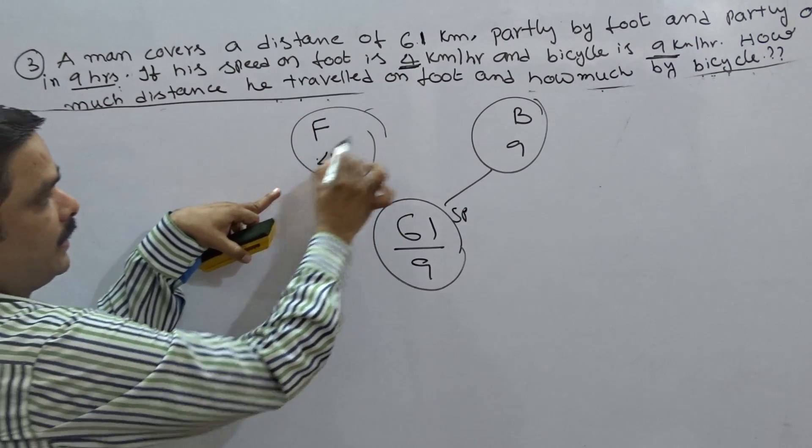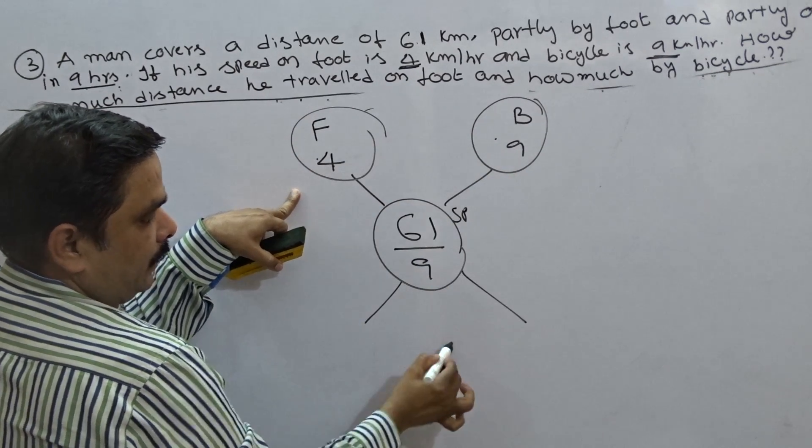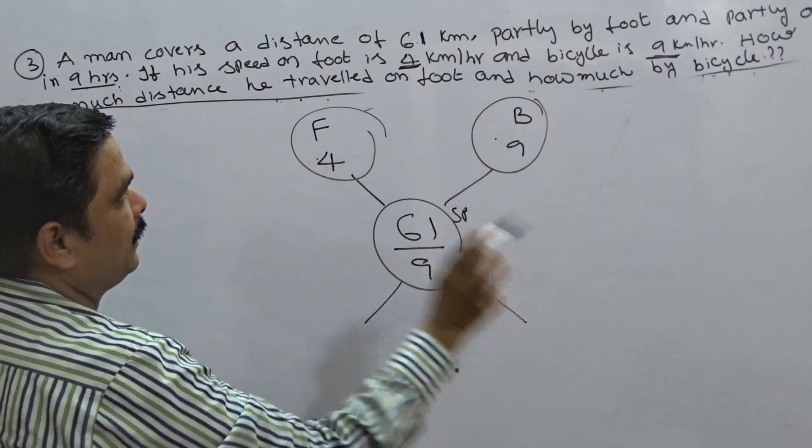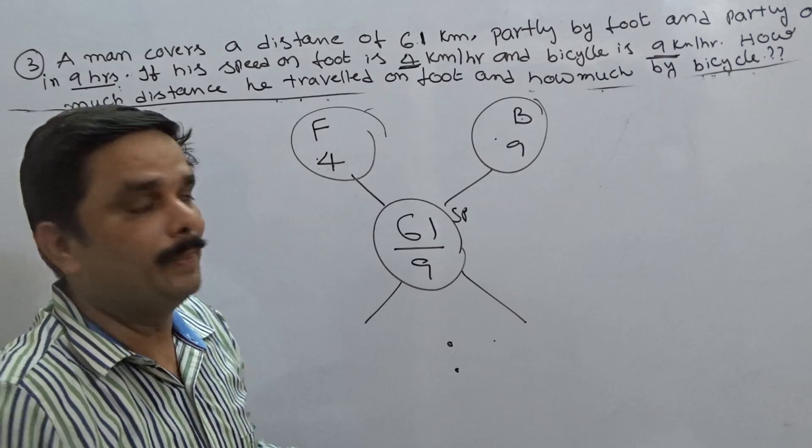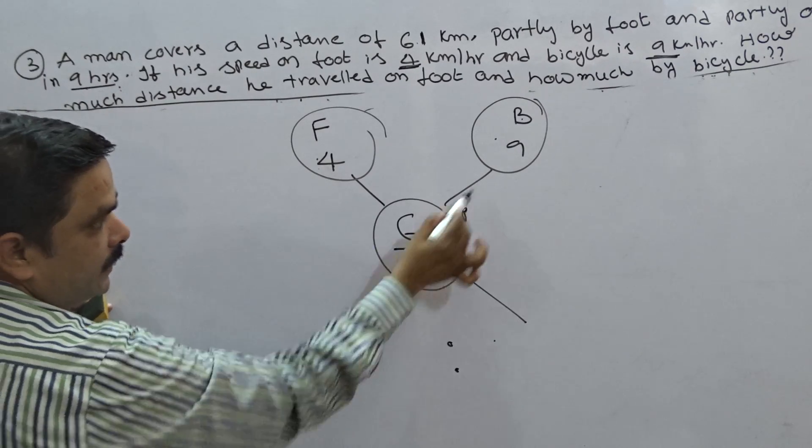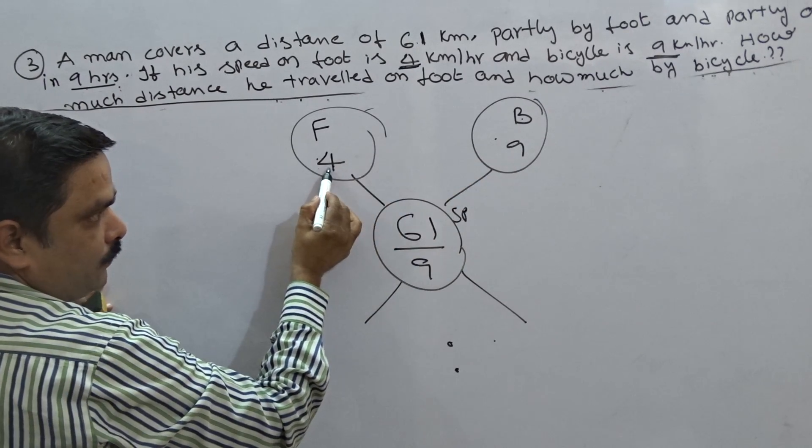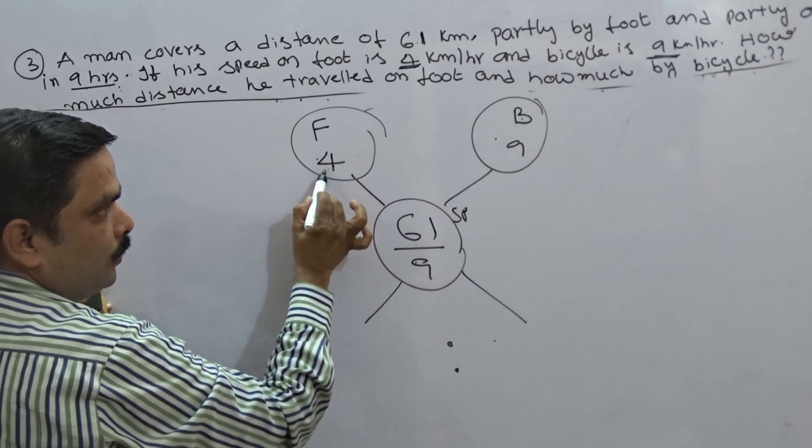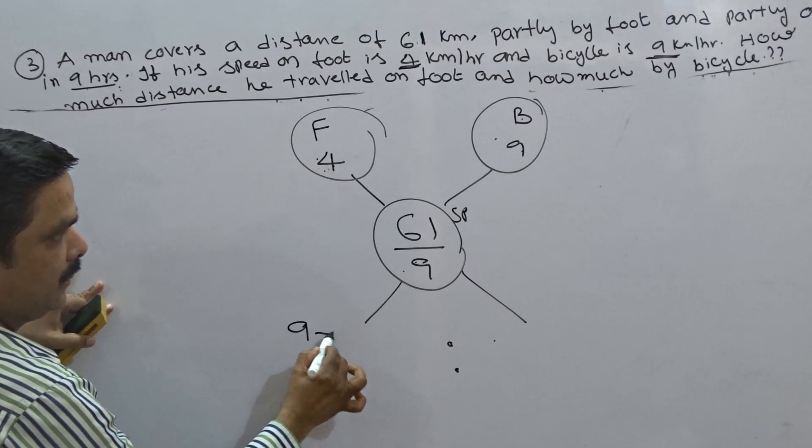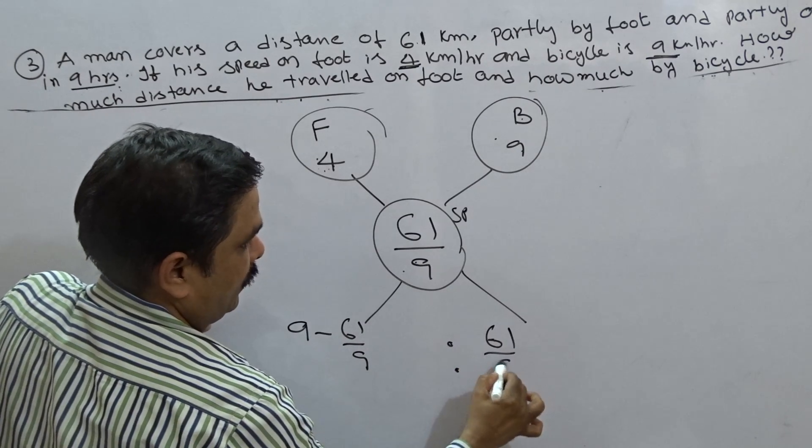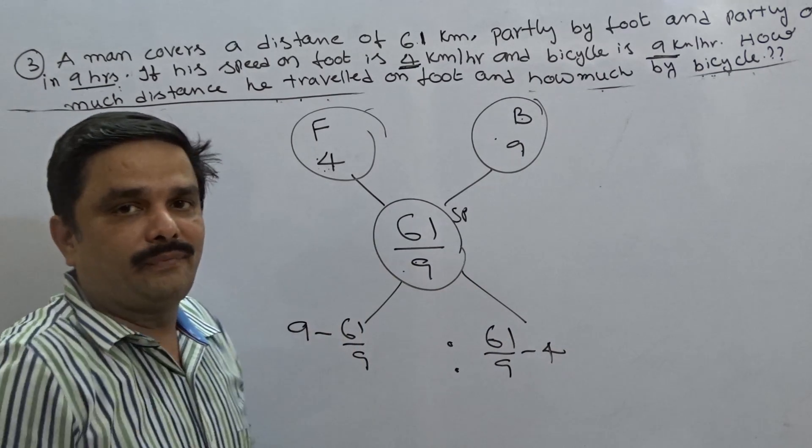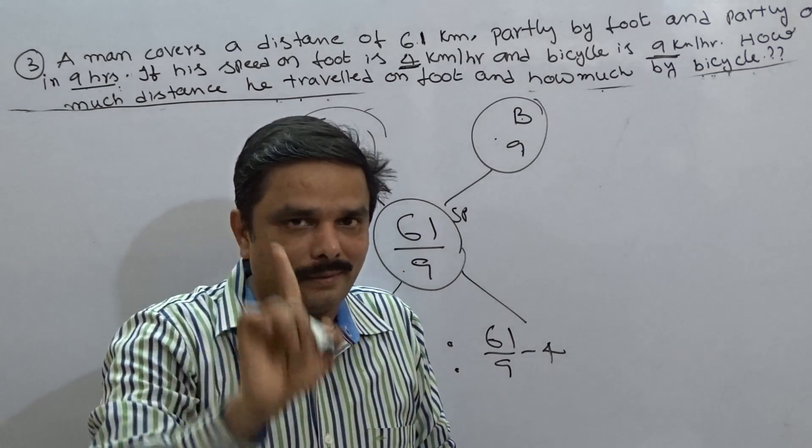Now, since I have started with speed, I should end up in time here. Now, the ratio of time on foot and time on bicycle. The ratio should be taken in this way. 9 is bigger than 4, so this value is somewhere between 4 and 9. Now, it should be 9 minus 61 by 9. Now, it should be 61 by 9 minus 4.